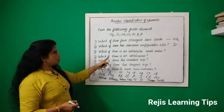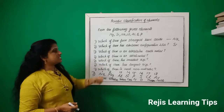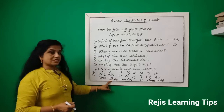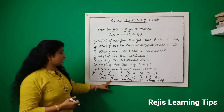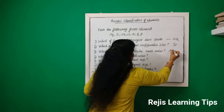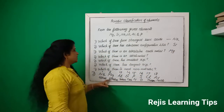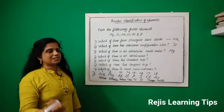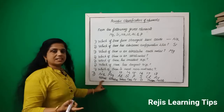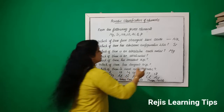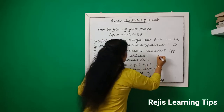Now, which of these is alkaline earth metal? Alkaline earth metals — that is magnesium. So we write magnesium as the answer. Then which of these is an alkali metal? Alkali metals are the first group element. That is sodium. Sodium is an alkali metal.